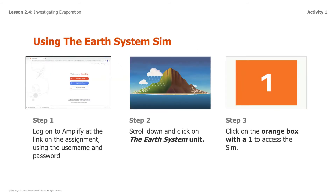How do I use the Earth system sim? In the assignment, there is a link to log on to the apps for Amplify Science. When you click on that link, go to the third option, which is 'Log in with Amplify.' Then you're going to use the username and password that's been provided to log in. Once you log in, go to step two — scroll down to the Earth system unit and click on that. Then click on the orange box with the one to get into the sim.